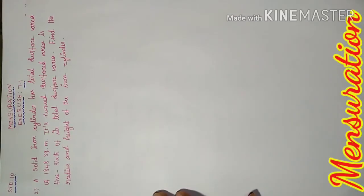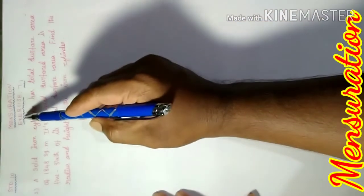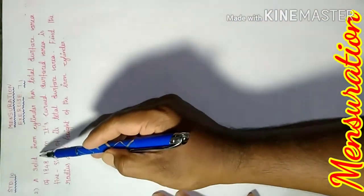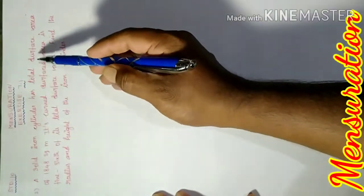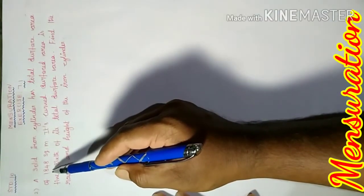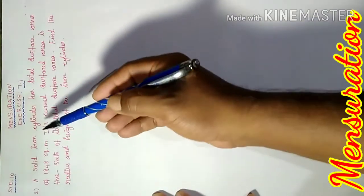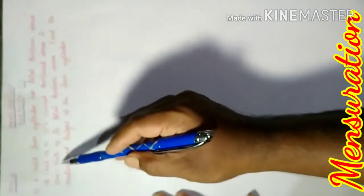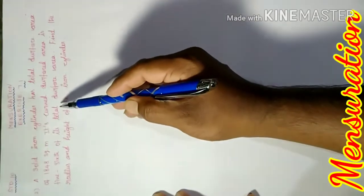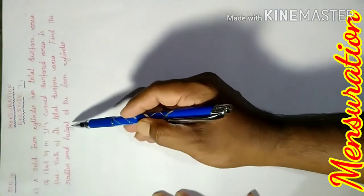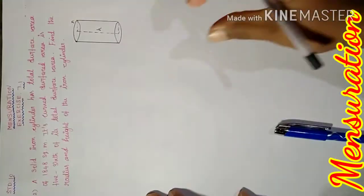Good morning students. Today our 10th standard chapter name is Mensuration, Exercise 7.1. A solid iron cylinder has a total surface area of 1848 square meters. The curved surface area is 5/6 of the total surface area. Find the radius and height of the iron cylinder.